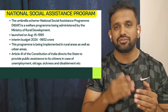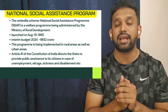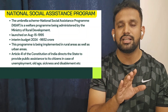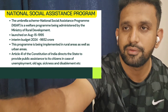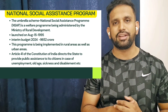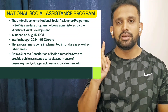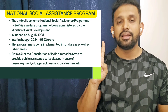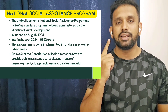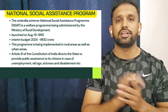The number of schemes under NSAP has been extended in a phased manner. When the scheme was launched in 1995, only three schemes existed: the National Old Age Pension Scheme, the National Family Benefit Scheme, and the National Maternity Benefit Scheme. Later, in the year 2000, the Annapurna Scheme was added. Then in 2009, the Indira Gandhi Widow Pension Scheme and the Indira Gandhi Divyanga (Disabled) Pension Scheme were added. So all six sub-schemes are part of the National Social Assistance Programme.